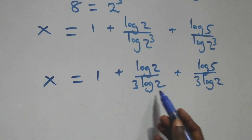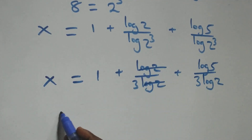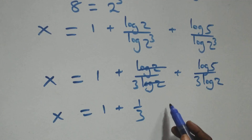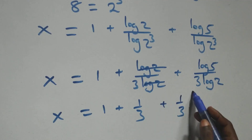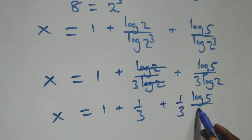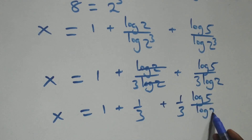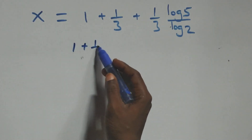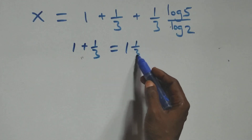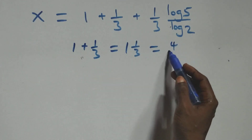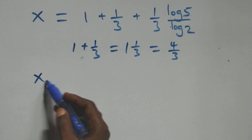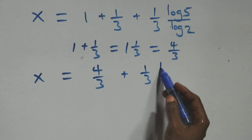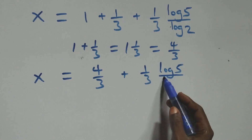log(2) cancels in the second term, giving x = 1 + 1/3 + (1/3)·log(5)/log(2). Now 1 + 1/3 = 4/3, so x = 4/3 + (1/3)·log(5)/log(2).